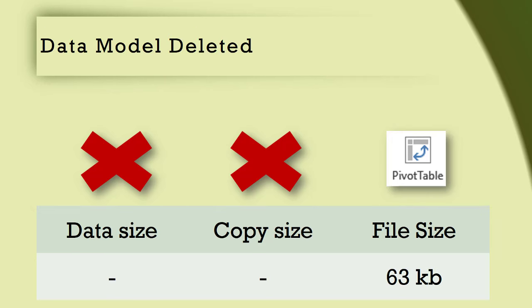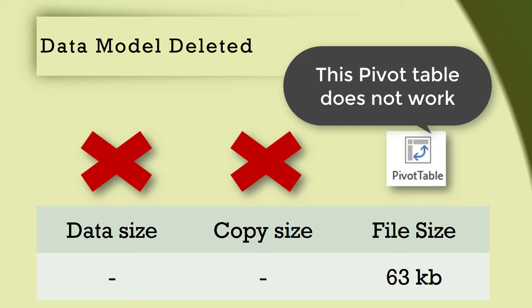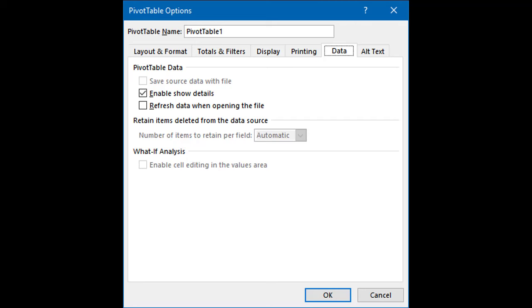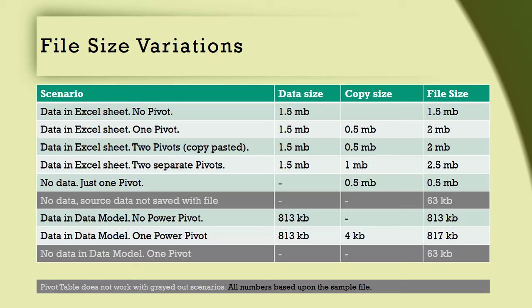If I remove the data model, the file size reduces to just 63 KB, and at that point the pivot table is not usable because it doesn't create its own copy. That is why for pivot tables created from a data model, the save data option is grayed out — it is irrelevant. Now that you understand the impact of pivot tables on file size, I strongly suggest you look at every pivot table you have created in the past and choose the right approach.